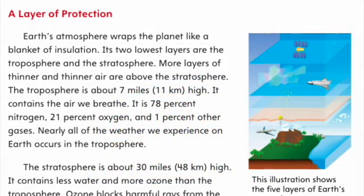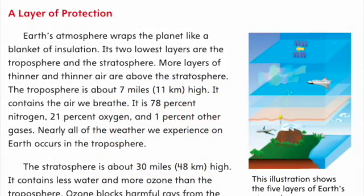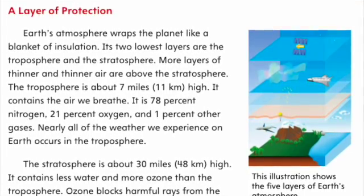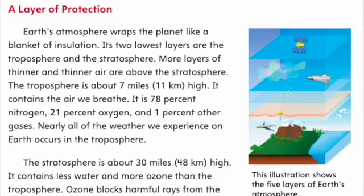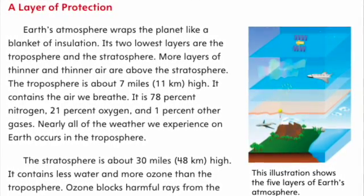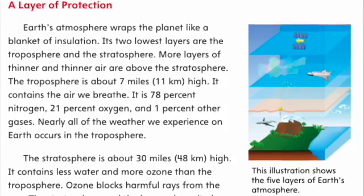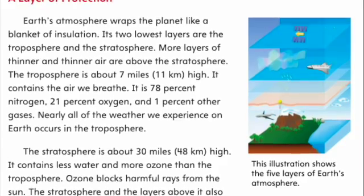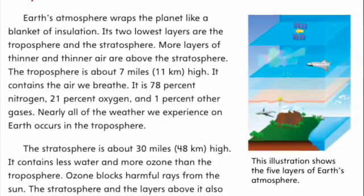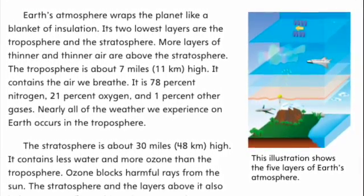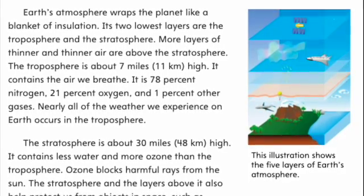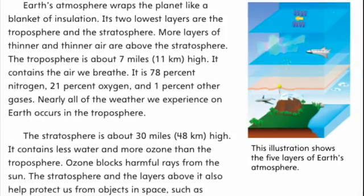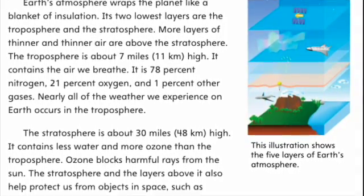A layer of protection. Earth's atmosphere wraps the planet like a blanket of insulation. Its two lowest layers are the troposphere and the stratosphere. More layers of thinner and thinner air are above the stratosphere. The troposphere is about 7 miles, or 11 kilometers, high. It contains the air we breathe — 78% nitrogen, 21% oxygen, and 1% other gases. Nearly all of the weather we experience on Earth occurs in the troposphere.